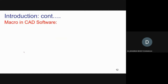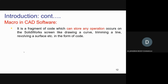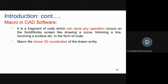Next, macros — a very important topic. A macro is a fragment of code. In simple words, it's just code, like C language or any other — but it can be understood by packages at the back end, not the front end. SolidWorks can understand the macro code at the back end. Since all these are based on Microsoft Windows, that helps them understand what exactly the code is. The macro file stores the 3D coordinates of drawn entities.